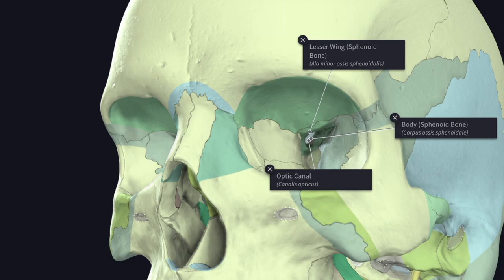The optic canal transmits the optic nerve invested by the sheath derived from the three meninges and the ophthalmic artery. The apex of the orbit is represented, for the purpose of measurement, by the center of the bony bridge that intervenes between the optic canal and the superior orbital fissure.